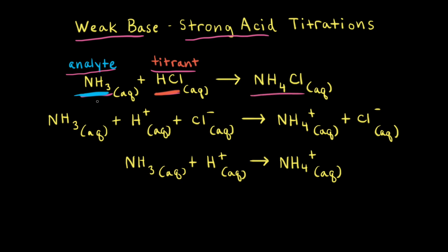For the complete ionic equation, since ammonia is a weak base we show it as NH3. Since hydrochloric acid is a strong acid that ionizes 100%, we show it breaking up into its ions: H+ and Cl-. Ammonium chloride is a soluble salt, so we show it in aqueous solution as ammonium cations and chloride anions.